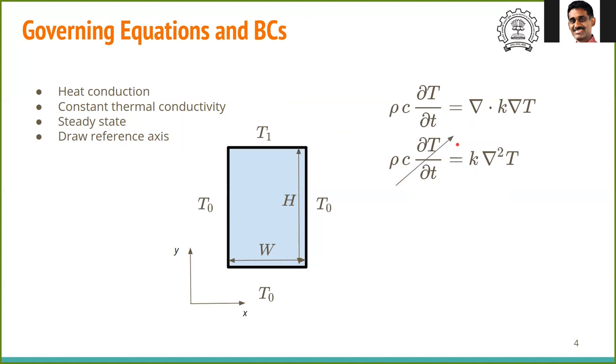Then we have the boundary conditions. At x = 0 and W at all y, the temperature is T₀. Temperature is T₀ at the bottom wall too, that is at y = 0 at all x. At the top wall at y = H, the temperature is T₁.